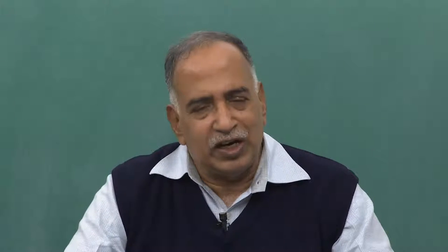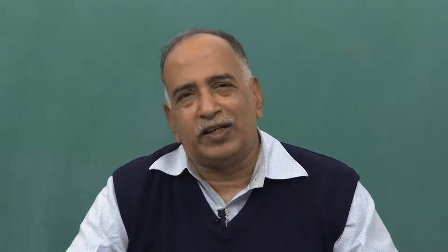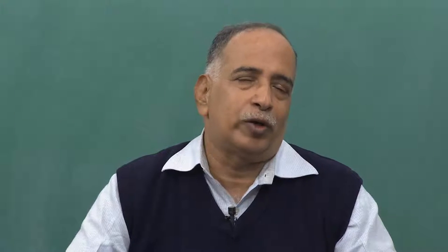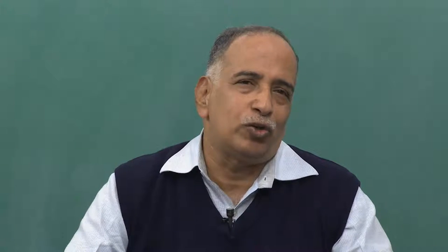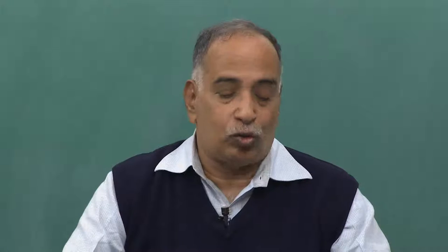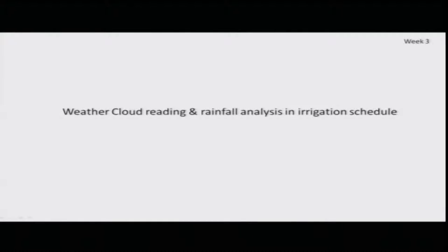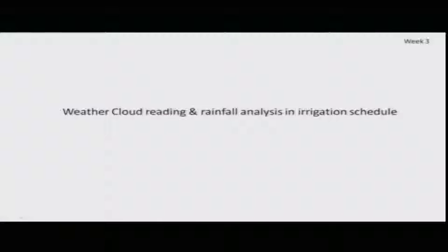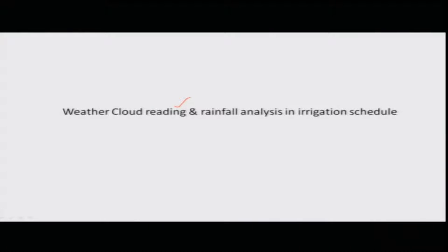In agriculture, we are primarily interested in water. The main source of water is rainfall, which comes from clouds. We need to understand whether the clouds visible on the horizon have potential to rain or not, so that supplementary irrigation from wells or other sources can be managed accordingly. This week's course is designed for cloud reading — how to estimate whether supplementary irrigation will be needed and how rainfall analysis is used in irrigation scheduling under rain-fed conditions.